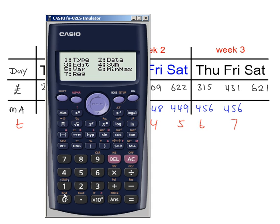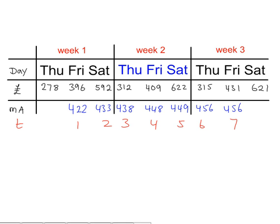And then shift, 1, regression. The a value there equals 420.4. So in the equation, y is equal to a plus bx. We have y is equal to 420.4.